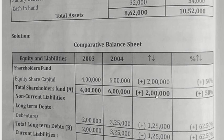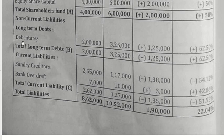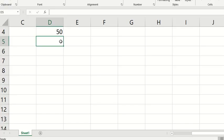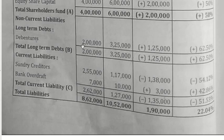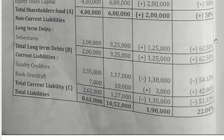Moving on to non-current liabilities — debentures (long-term debts): last year it is 2 lakhs, this year it is 3 lakh 25,000. There is an increase of 1 lakh 25,000. Percentage increase: 1 lakh 25,000 divided by 2 lakhs into 100 equals 62.50%. Total long-term debts: 2 lakhs, 3 lakh 25,000, +1 lakh 25,000, 62.50%.